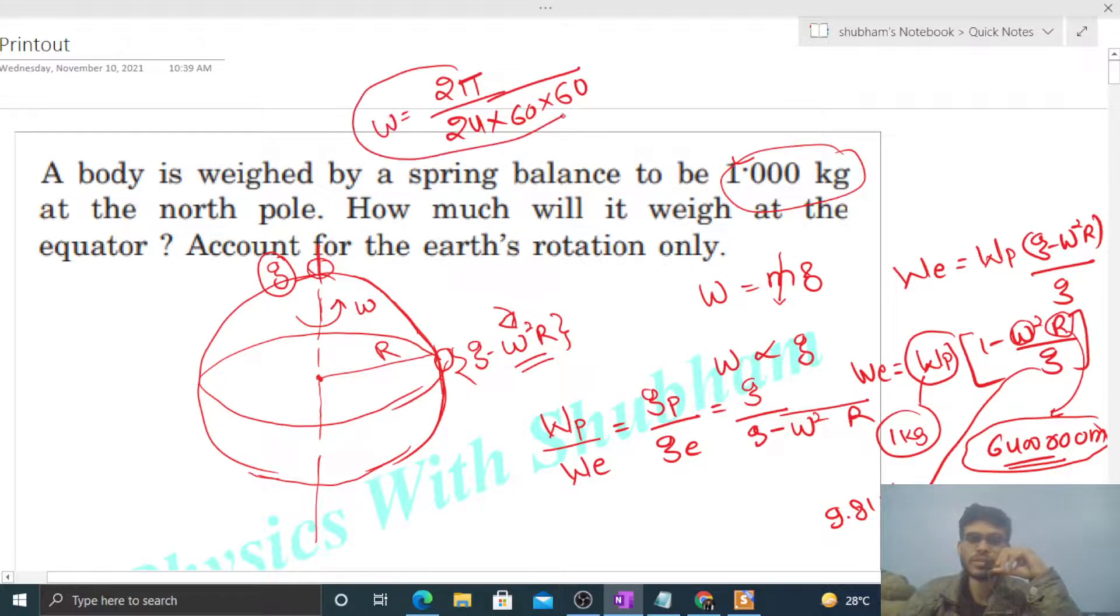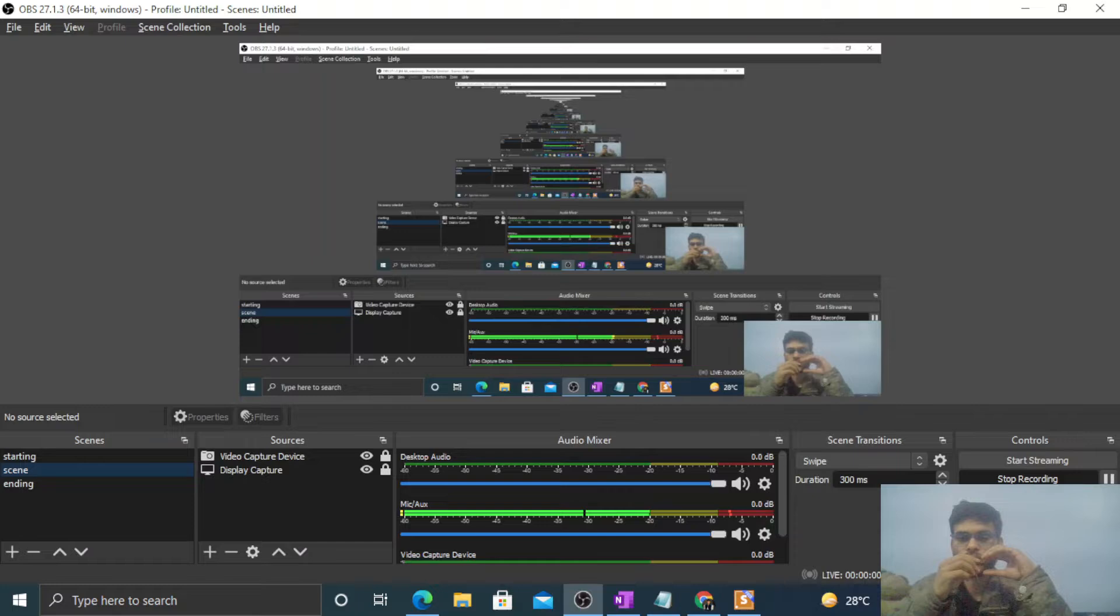So this is angular speed. We'll put these values, and from here you will get the value of the weight of the body at the equator. So I think you have understood. Let me know if you still have any confusion, we can discuss further. Okay guys, keep working hard. Best of luck, bye.